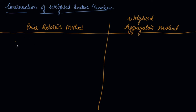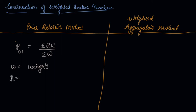In the price-relative method, the price index of the current year in relation to the base year is equal to the summation of R times W divided by the summation of W, where W are the weights assigned to the goods. R is the price relative, which we find with the formula P1 divided by P0 into 100.